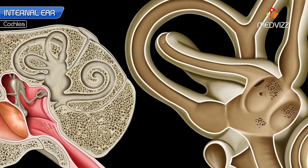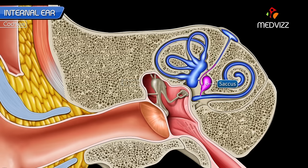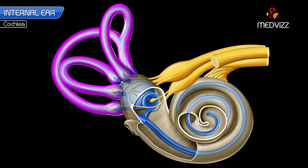The vestibular aqueduct transmits the prolongation of the membranous labyrinth — the saccus and the ductus endolymphaticus. The anterior vestibular wall bears an opening which communicates with the scala vestibuli. The posterior vestibular wall has five openings for the three semicircular canals.